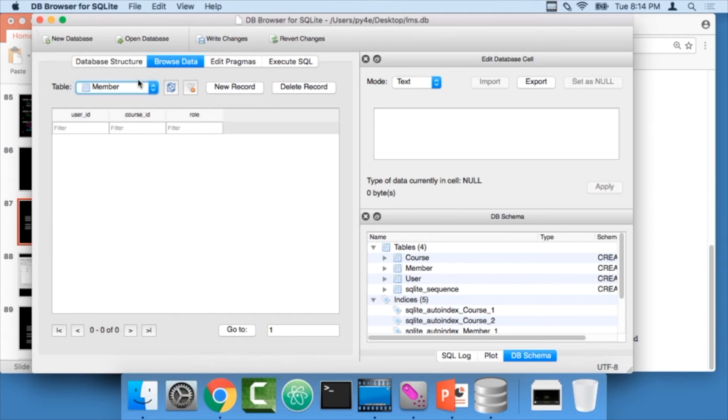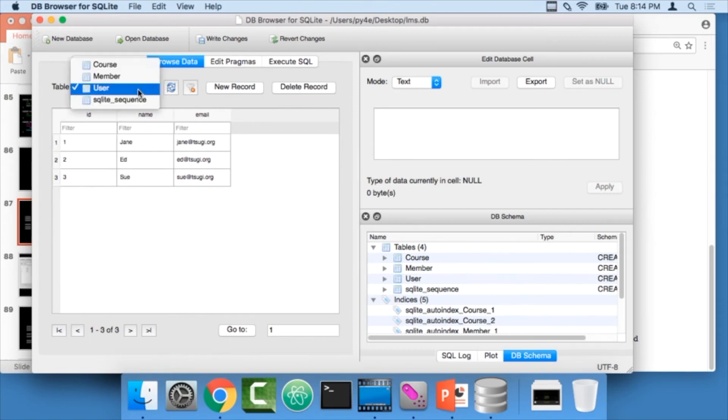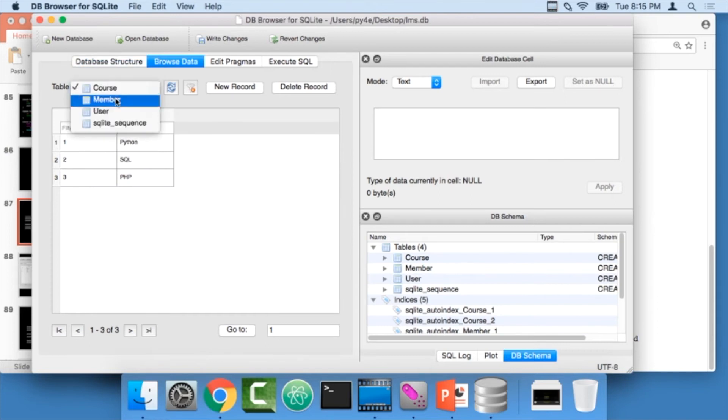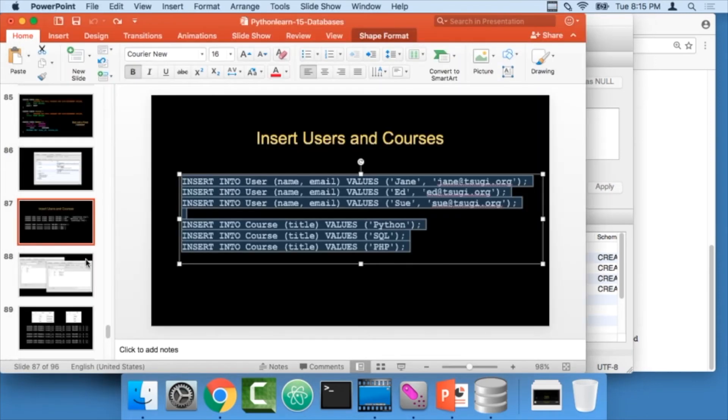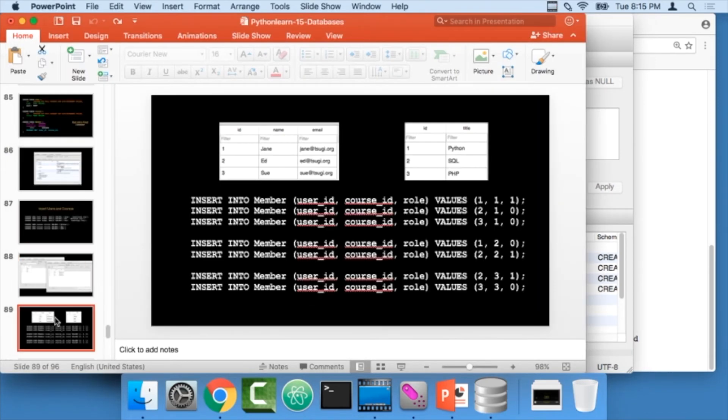I've got nothing in the membership table. I have to remember what these values are because Jane is one, Ed is two, and Sue is three. Python is one, SQL is two, and three. When I go into membership, I've got two foreign keys here and a role. They just have to be for the course person combination. It's a little tricky to figure all this stuff out, but these are just numbers.